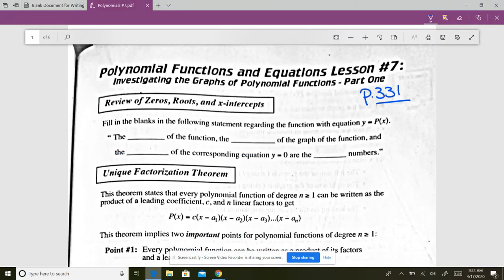All right everybody, we're on page 331, lesson number seven. This is a very short lesson. It's basically getting used to identifying what graphs, the general shape of a graph, based on its degree.